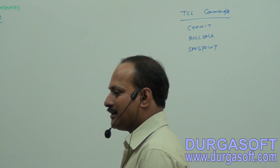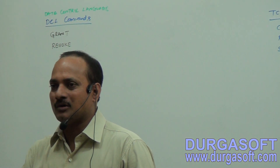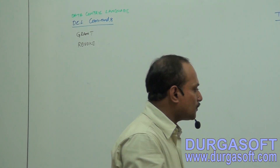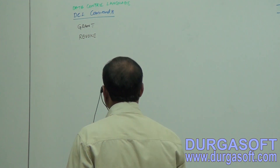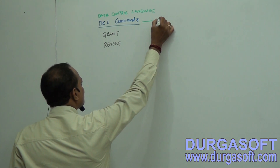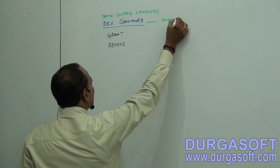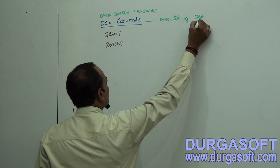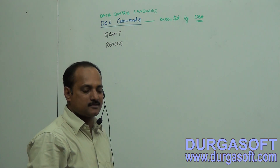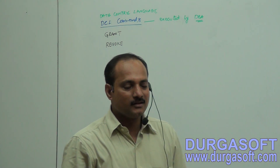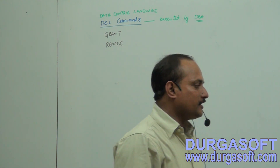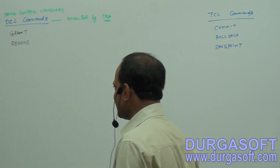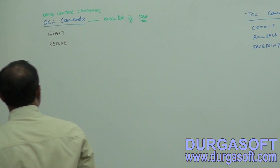He doesn't want to allow other users to access his object's data. We are not controlling that — that should be done by the DBA. DCL commands are executed by only the DBA. He can provide permission on any database object and he can take back permission on any database object. He is the super user for our database.